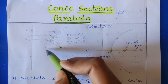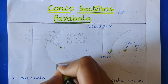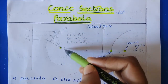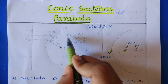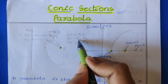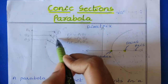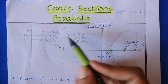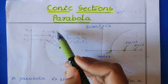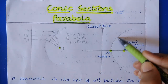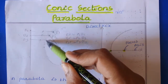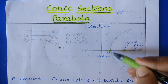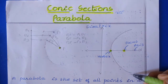Like this way, we have considered so many points — all these points are the set of points which are equidistant from this fixed point as well as from this fixed line. That is, P1F = P1B1, P2F = P2B2, P3F = P3B3. This distance equals this distance, and this equals this one. If I join all these set of points, then you get a figure — that figure is known as a parabola.